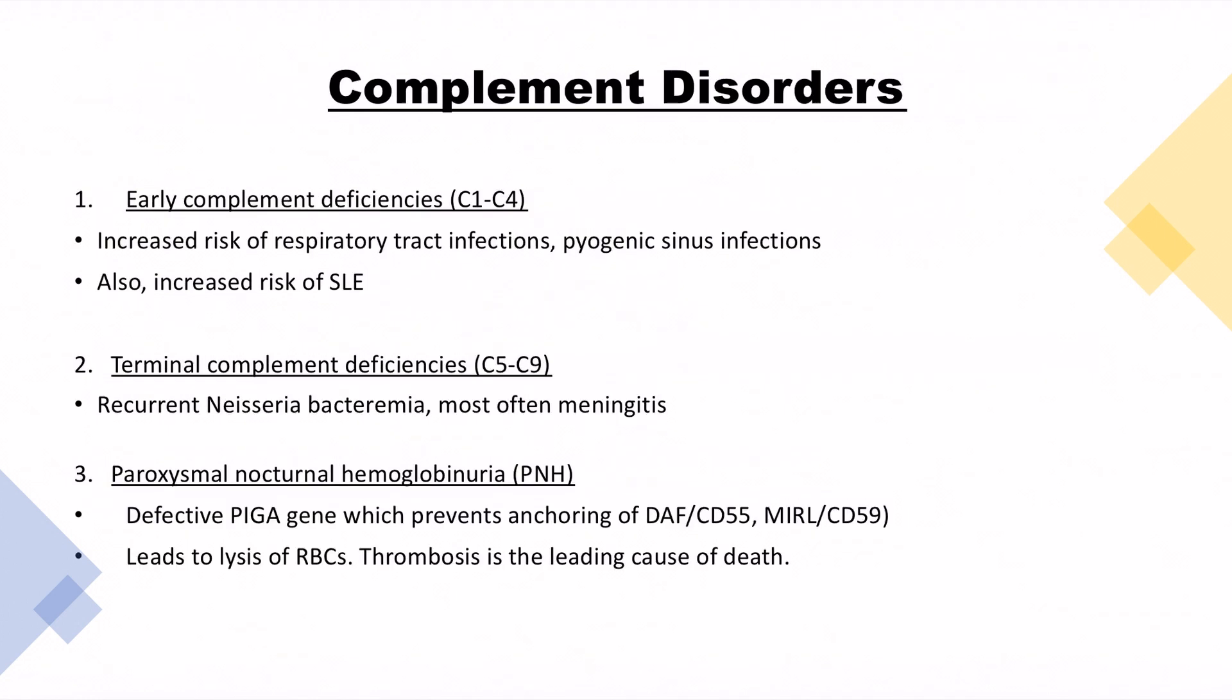Now what are the complement disorders? Early complement deficiencies consist of C1 to C4 deficient proteins. If you have deficiencies from C1 to C4, this will lead to increased risk of respiratory tract infections and pyogenic sinus infections. Also increased risk of SLE is seen.